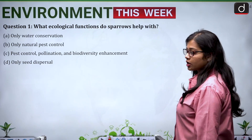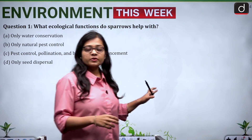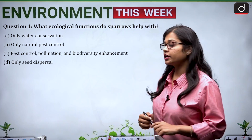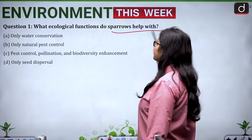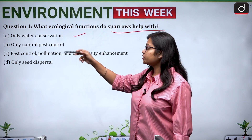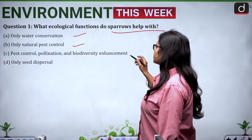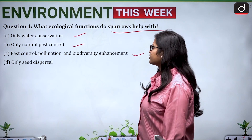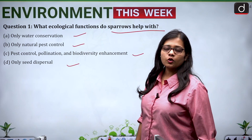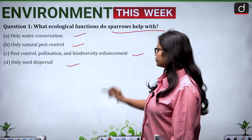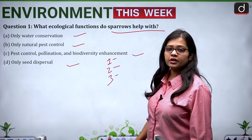Now coming to the practice questions related to all three topics discussed. The first question is: what ecological functions do sparrows help with? Options are: only water conservation; only natural pest control; pest control, pollination, and biodiversity enhancement; or only seed dispersal. Write your answers in the comment section with the question number followed by your answer.